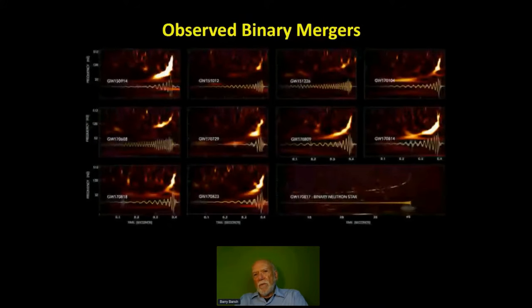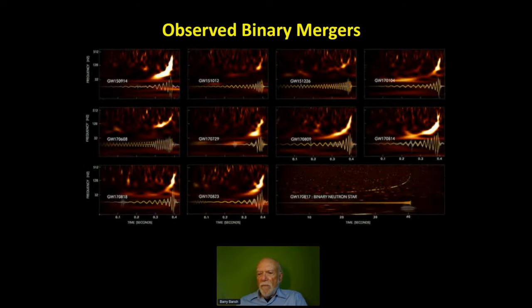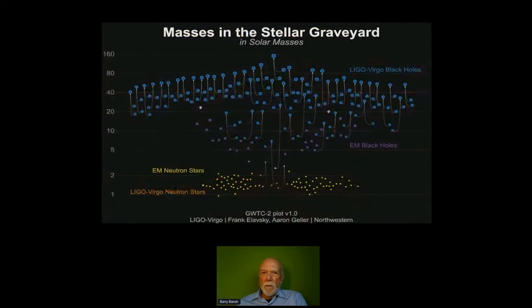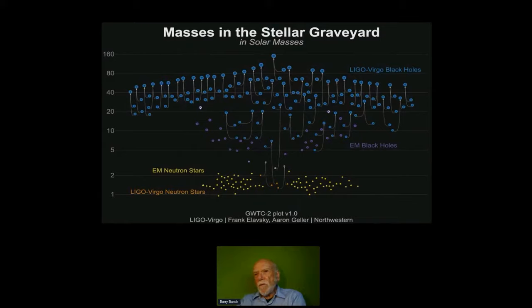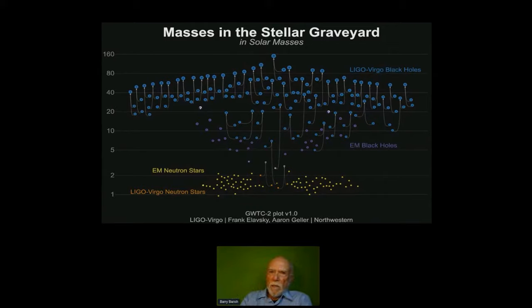A sweep of a few of the events shows they all look different from each other. Together they give us the distribution of black hole masses. The tendency is that we detect heavy ones — a combination of the fact that there are more heavy ones than we first anticipated, and also that heavy ones give a bigger signal, which is easier to see in a gravitational wave detector.